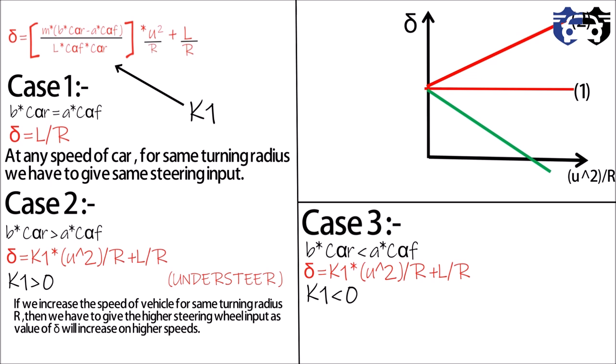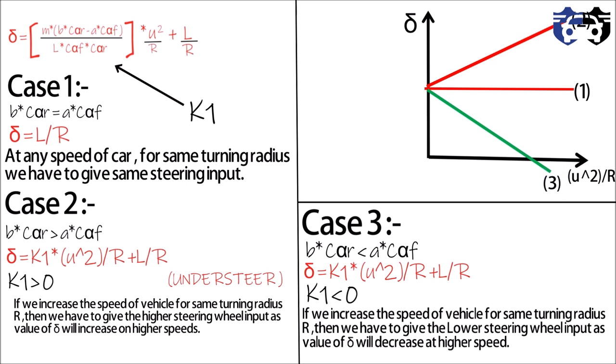You can see from the curve, as the velocity of car is increased, the steering angle is decreasing. So for the same turning radius at higher velocity, we have to give less steering input. Hence, this is oversteer.